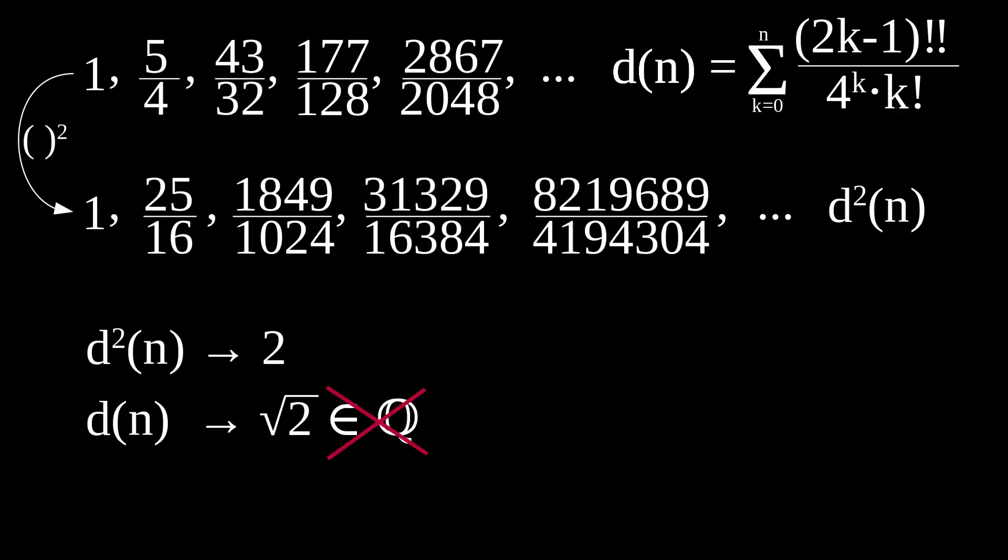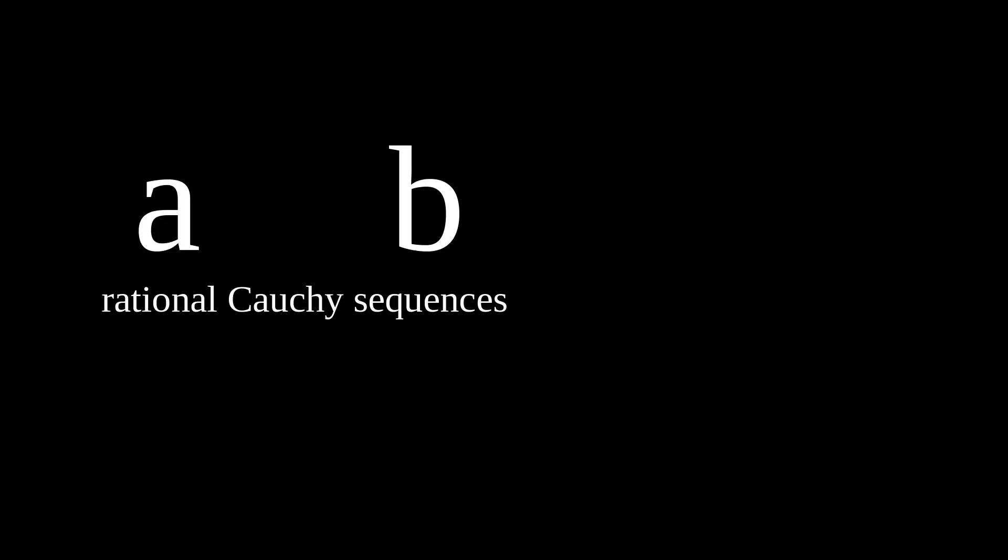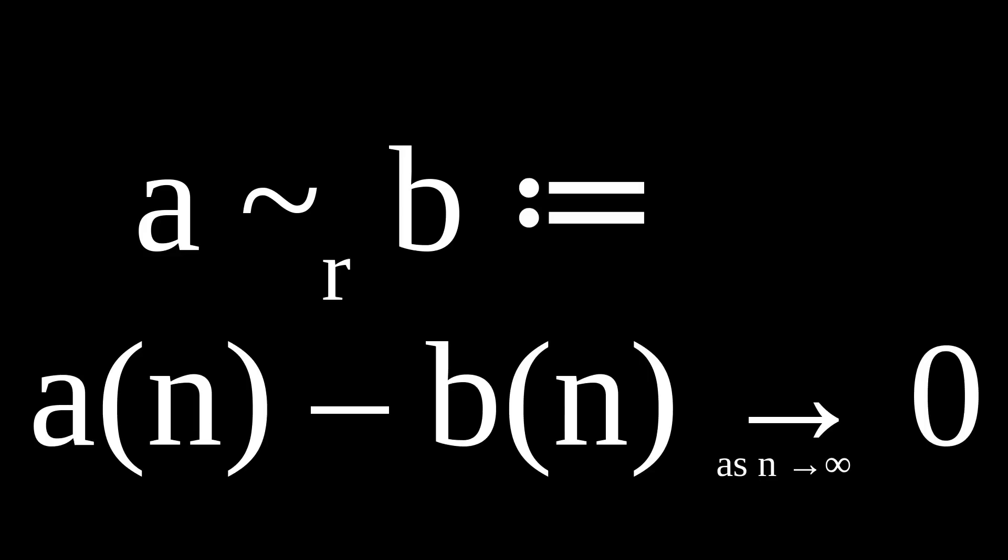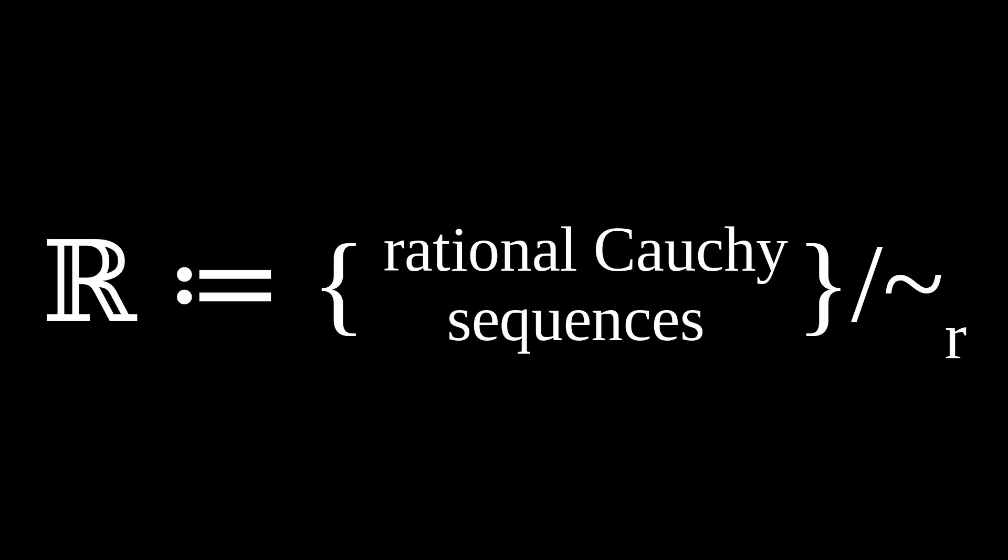Can we extend our numbers once more such that every Cauchy sequence converges? It's time to use the quotient trick one more time. If a and b are rational Cauchy sequences, then let them be equivalent according to tilde r if their differences approach 0. There is no need to take the magnitude here—the differences can be negative as long as it eventually approaches 0.